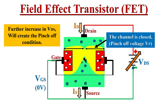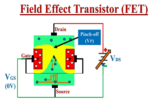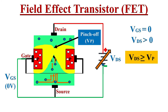At pinch-off, there is no path for charge carriers to flow from one side to the other. The voltage at which this occurs is known as the pinch-off voltage, denoted as VP. Here VGS equals zero and whenever VDS is greater than or equal to VP, this pinch-off condition will occur. Once this pinch-off condition occurs, theoretically the currents ID and IS would drop to zero, but practically this won't happen.